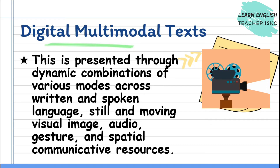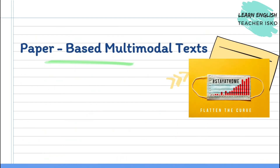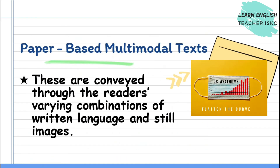Some examples of digital multi-modal text are films, animations, slideshows, e-posters, this video lesson, and many more. A multi-modal text can also be paper-based. This is conveyed through the reader's varying combinations of written language and still images — meaning the paper-based multi-modal text is something that is printed. For instance, we have infographics, posters, comics, and pictures.